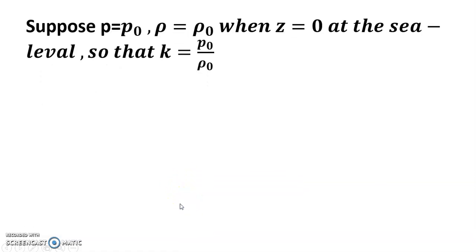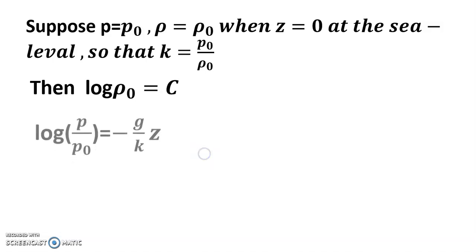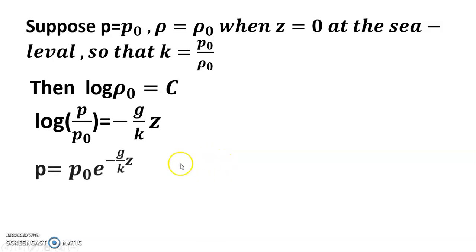Suppose p = p₀ and ρ = ρ₀ when z = 0 at the sea level, so that k = p₀/ρ₀, thus C = log(p₀). Therefore log(p/p₀) = -gz/k, and p = p₀e^(-gz/k). Perfect gas: